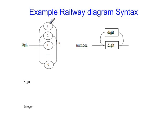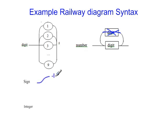Looking at an example of railway diagrams: we have a digit defined as 0 through to 9, and a number defined as a digit followed by zero or more additional digits. Then we define a sign, which is an optional either plus or negative, represented as a pathway of either plus or negative.